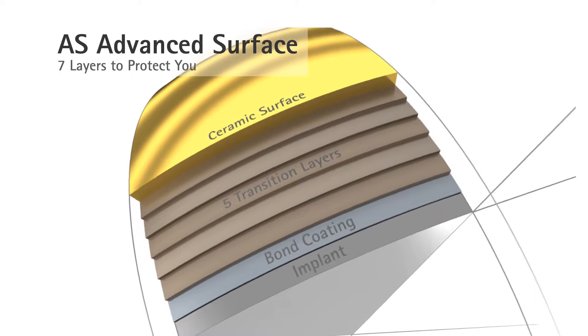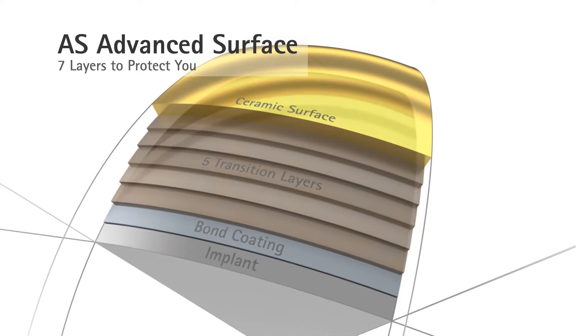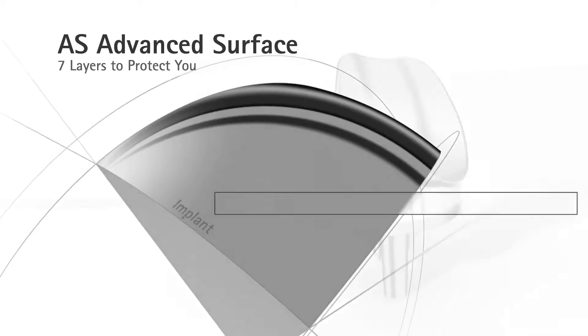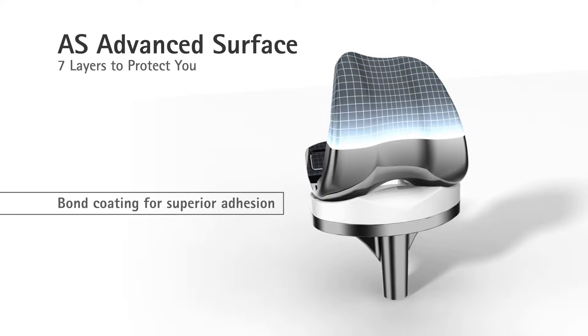The five transition layers provide stability and create a barrier effect that prevents the release of metal ions. And finally, the adhesive layer bonds the substrate securely to the coated layers.